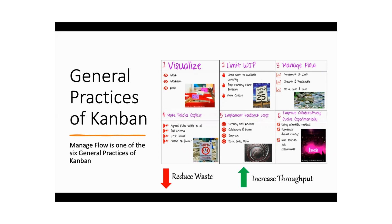The third general practice of Kanban is managing the flow. You look at how your work moves and you have to make it smooth and predictable. There are various ways to look at the flow and to make it smooth, and this is the topic of this particular webinar — flow management with Kanban.